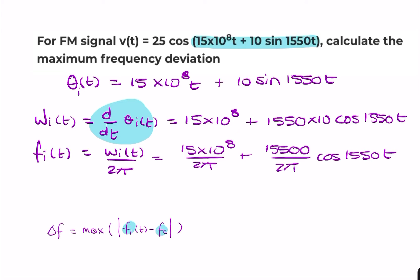Now, what we want to find is the maximum difference between the instantaneous frequency and the carrier frequency. Given that that's the carrier frequency, it means that this is the difference term. That is that. And that will be maximum when the cosine is equal to 1.